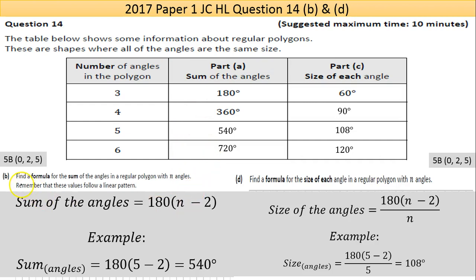That's Part B. Part B is worth 5 points. Part D here is also worth 5 points. It's a very similar thing. Find a formula for the size of each angle in a regular polygon. So let's see what we can make work with this.